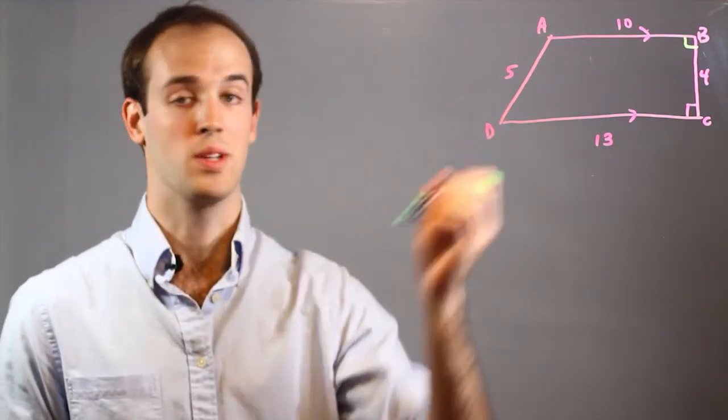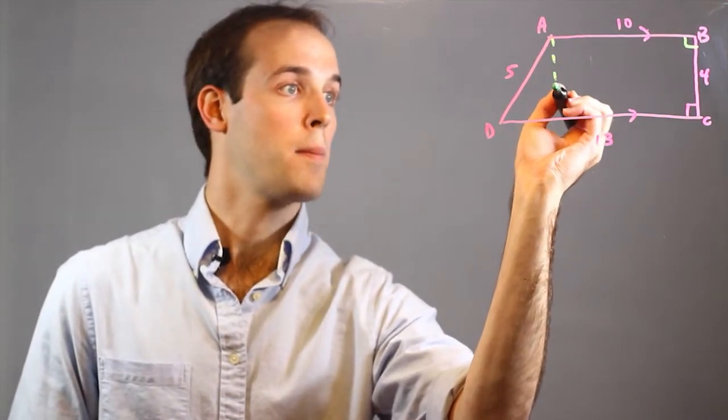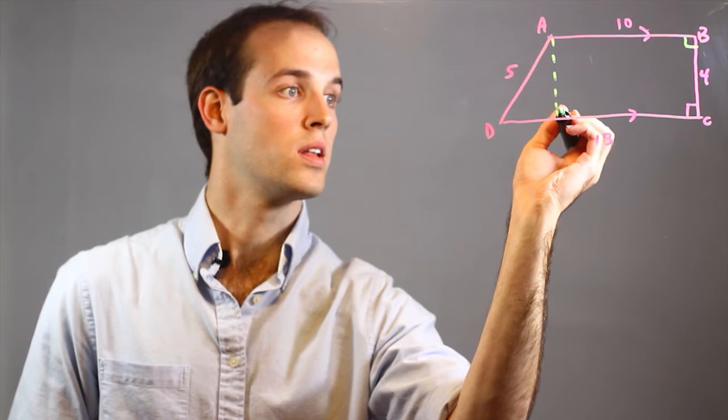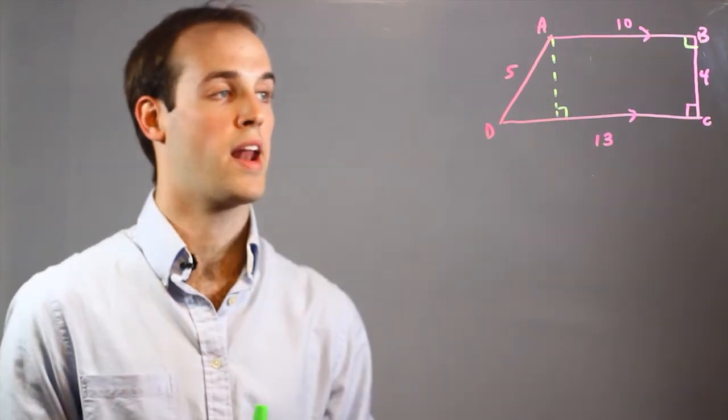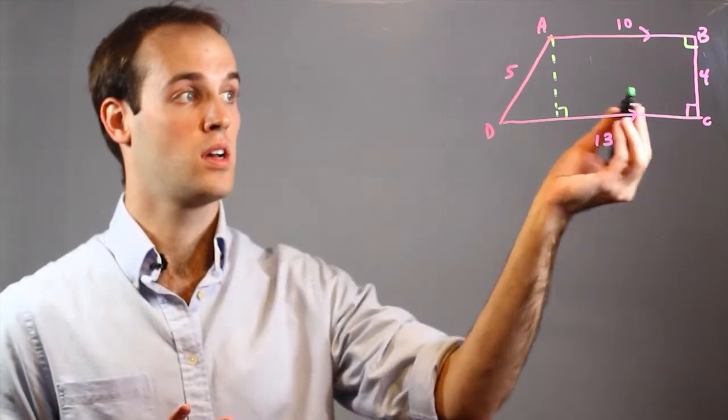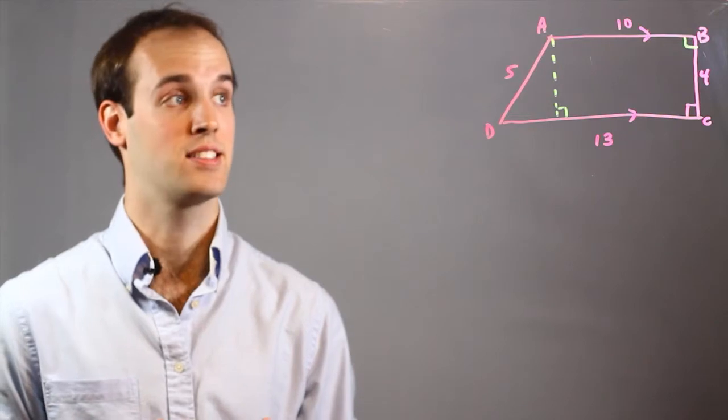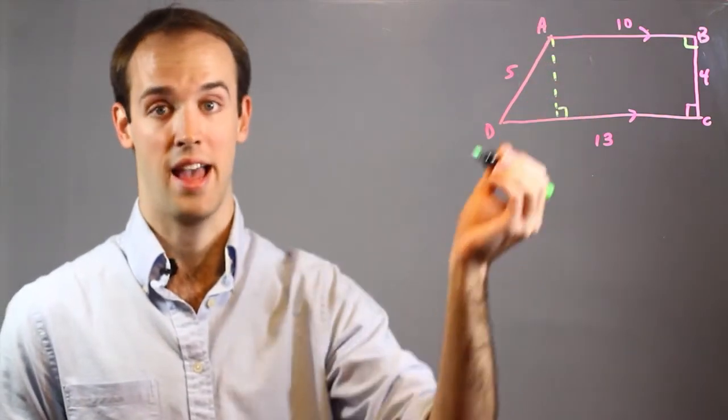To find these two it's going to be a little more tricky and I can get them by dropping this altitude down just like this, making a right angle there. And instead of a trapezoid, now I have a rectangle and a right triangle which is going to be a huge asset for me in discovering these next two angles, A and D.